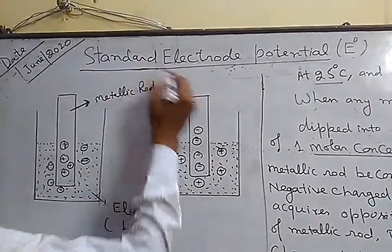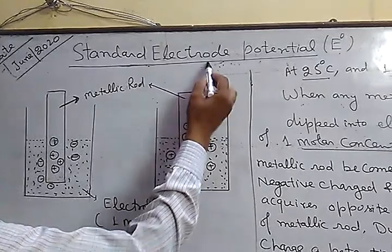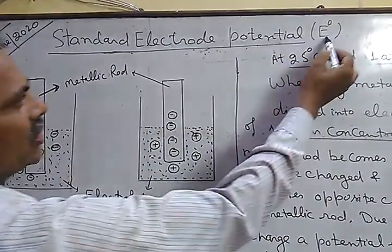Hello students, I am explaining about the standard electrode potential. It is denoted by E0.